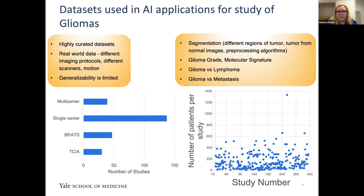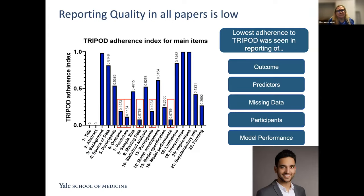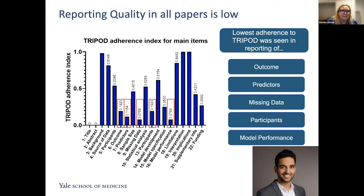These are the applications that different machine learning studies were used for. We also noticed that when we looked at reporting quality across all papers, it was actually very low. One of my students described a TRIPOD adherence index, and what he found was that the lowest adherence to TRIPOD was seen in reporting of outcomes, predictors, missing data, participants, and model performance. The question we were asking was: how do we take these algorithms and translate them to our clinical practice at Yale when we can't even get model performance information from the articles we're reading?